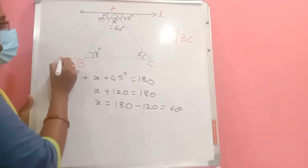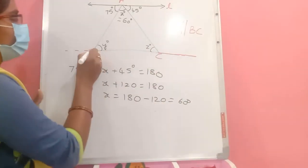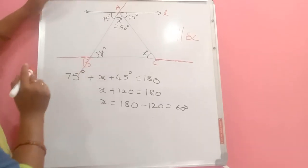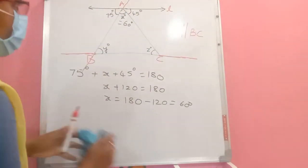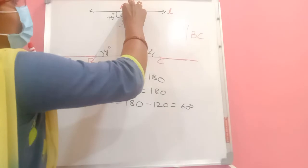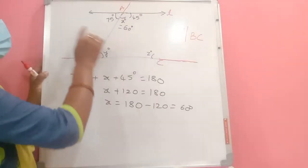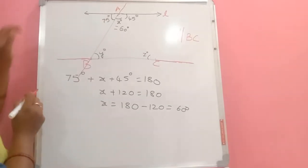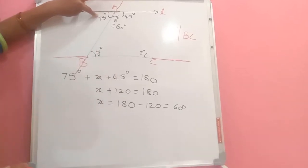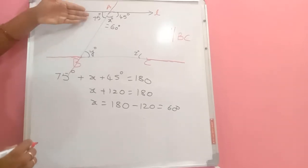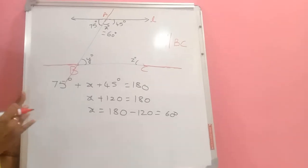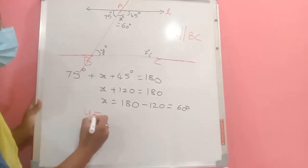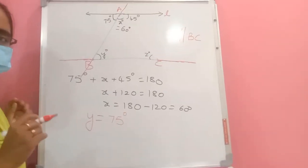Now, considering L and BC as parallel lines with AB as a transversal: the angle of 75 degrees on line L and angle Y at B are alternate interior angles — on opposite sides of the transversal and both interior. Since alternate interior angles are equal, Y = 75 degrees.